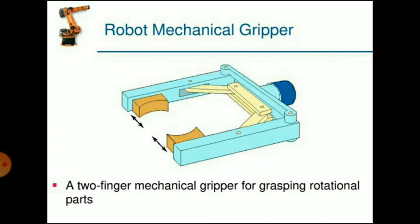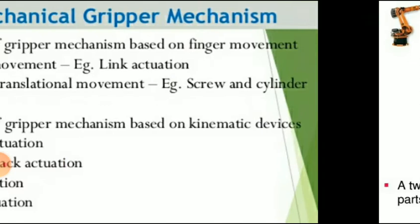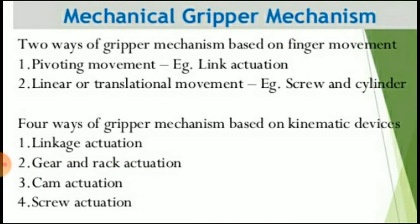A two-finger mechanical gripper is commonly used for grasping rotational parts, operating in a jaw-type fashion with fingers either attached or part of the construction. Attached fingers can be replaced with new or different fingers. Grippers can operate with two or more fingers.